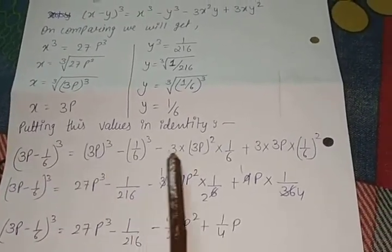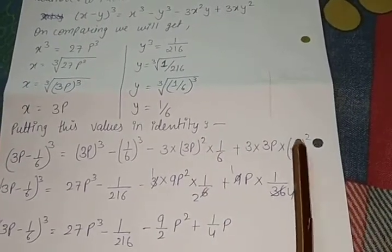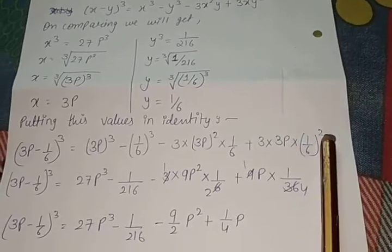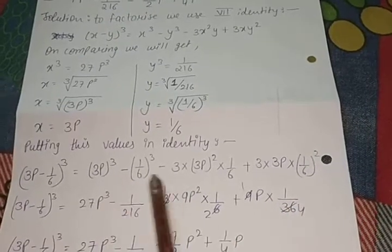Where x is 3p and where y is 1/6, powers are all the same. Where x is square, there is 3p square. Where y is square, there is (1/6)². You can compare with your identity power notation and exponents.